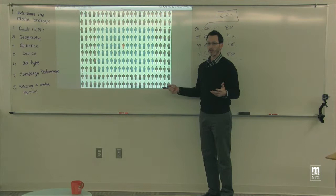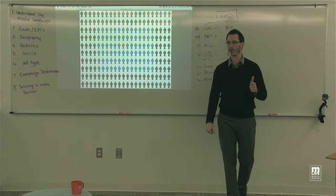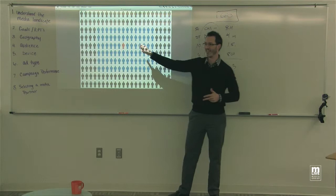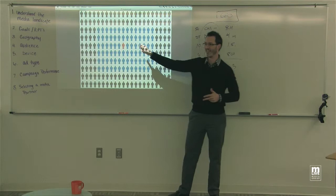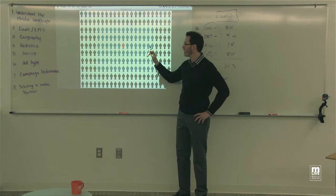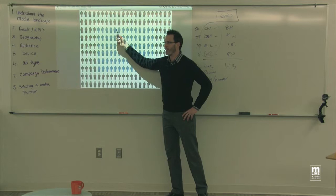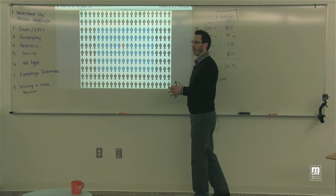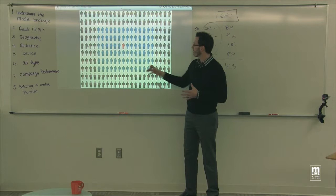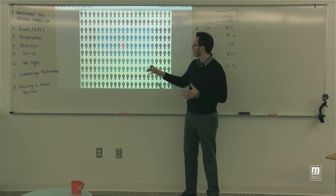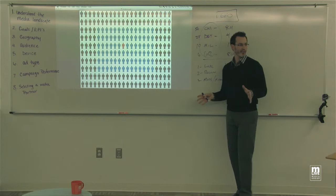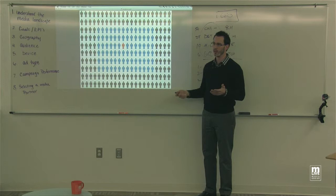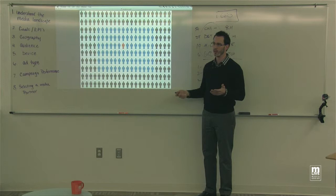Meijer came to us and said they wanted to reach women 25-54, primary household shopper with $100,000+ household income. What we noticed is that when we dropped the household income and primary household shopper requirements and just went women 25-54, we actually saw a performance increase. By loosening our targeting a little bit and allowing some other people to receive that message, we saw better performance. Then we went just 'women' and saw better performance there as well.